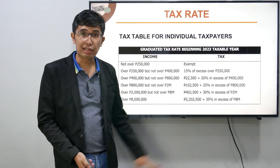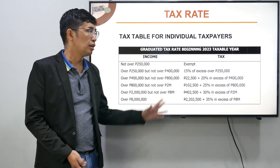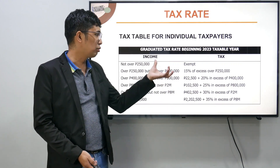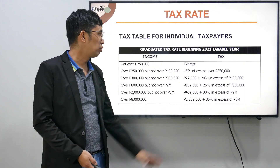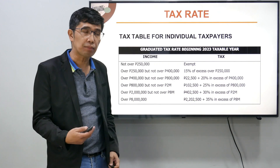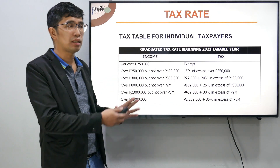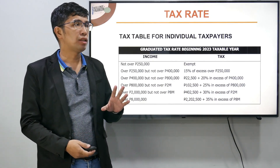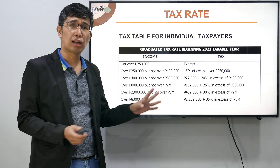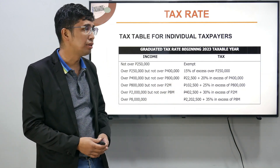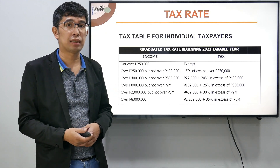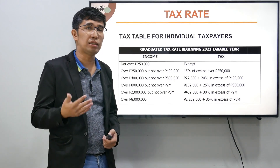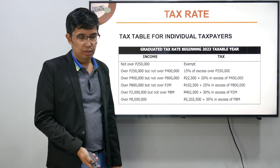Ito yung ating graduated tax rate — eto din yung basis natin in computing income tax ng individual. Meron tayong bracket ng income: yung first 250,000 ay exempt. Kung yung property sa illustration natin na ipinagkatiwala sa ibang tao for the benefit ng kapunya, sa loob ng isang taon hindi naman lumagpas ng 250,000 yung income, then it will be exempt from income taxation. Sa TRAIN Law natin, yung unang 250,000 na income ng individual ay tax-exempt.